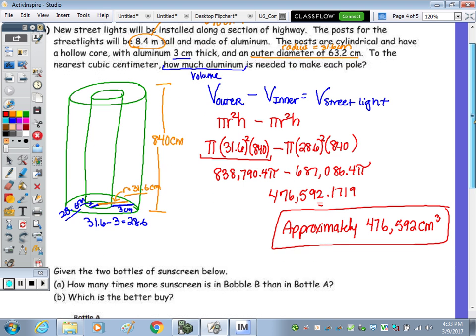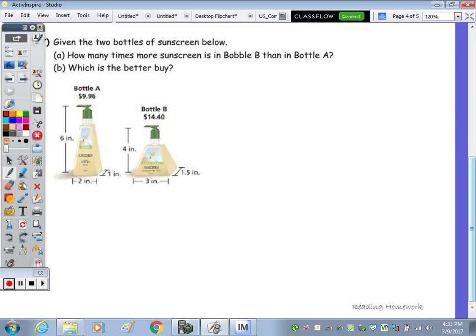Alright, the last one. We're given two bottles of sunscreen below. How many times more sunscreen is in bottle B than bottle A? That's volume. And then which is the better buy? So let's take a look at bottle A and bottle B. Bottle A, on the left: these are in the shape of a pyramid. We have the rectangular base.